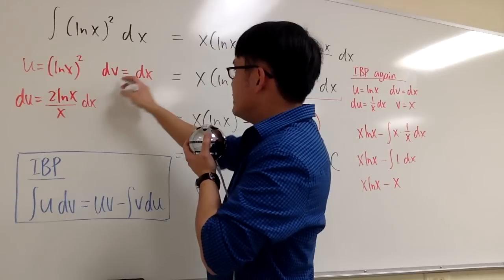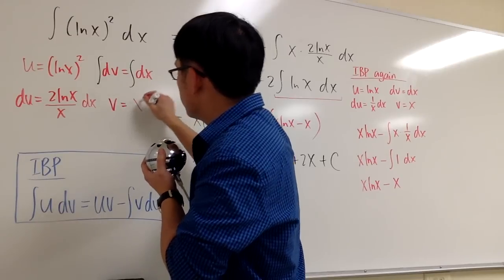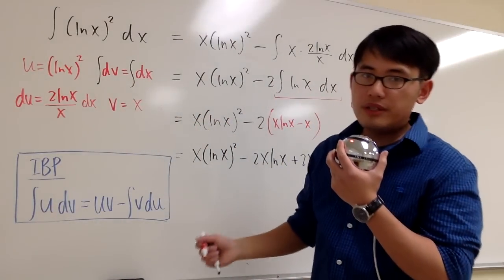And by looking at dv equals dx, we can integrate both sides, and we'll get v equals x. And we are ready to go.